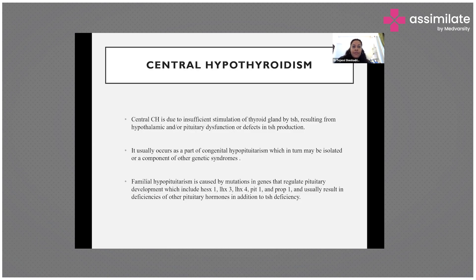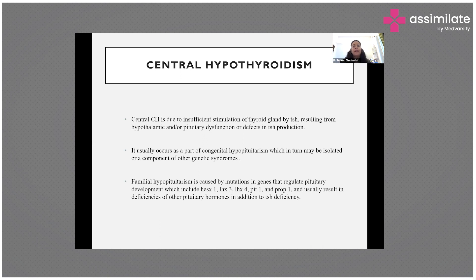Central hypothyroidism results from insufficient stimulation of the thyroid gland by the hypothalamus (via TRH) or the pituitary (via TSH), due to hypothalamic or pituitary dysfunction. This can occur as part of congenital hypopituitarism involving multiple pituitary hormones, or it can be isolated where only TSH is involved, or it can be part of multiple syndromes.